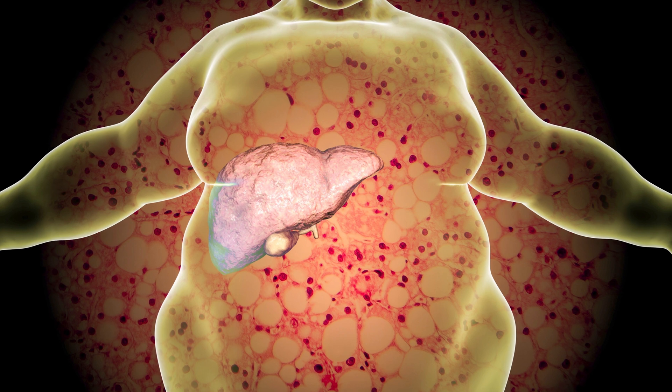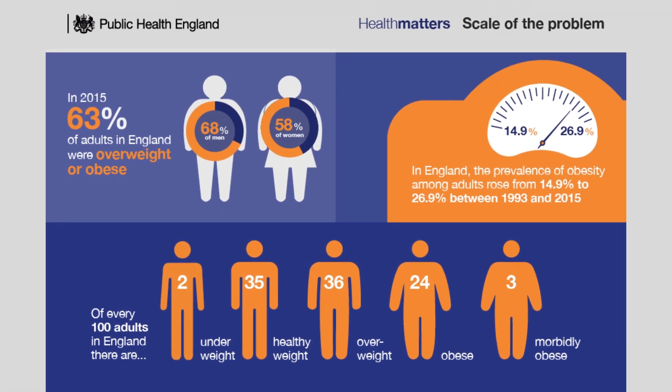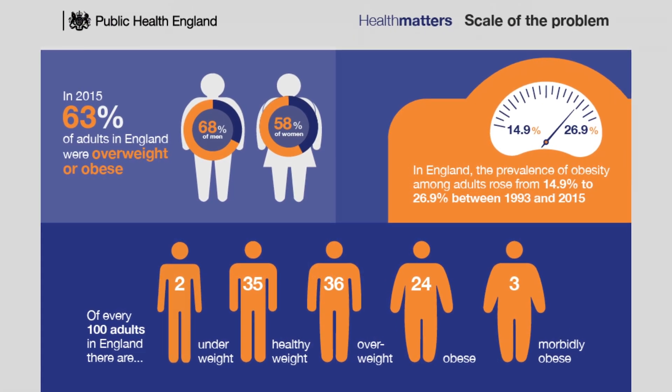How common is non-alcoholic fatty liver disease? It's usually seen in people who are overweight or obese. More than 60% of adults in the UK are overweight or obese, and it is estimated that up to 1 in 3 people in the UK has early stages of non-alcoholic fatty liver disease — that's around 33.3% — but I believe these numbers are underestimated.